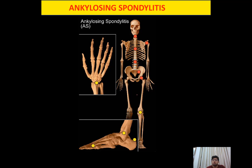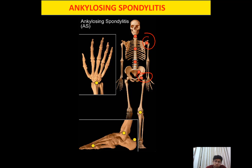So the joints involved centrally are the vertebral body, the sacroiliac joint, the sternoclavicular joint, the costovertebral joint, and the costochondral joint. When it comes to the peripheral joints, it will involve the shoulder joint and the hip joint — the large joints are involved. Usually, the small joints are not involved in ankylosing spondylitis.